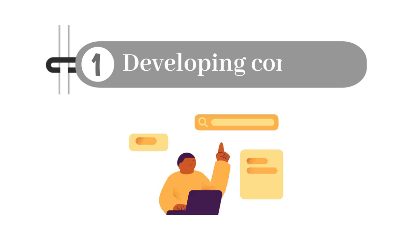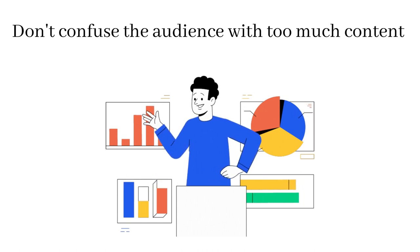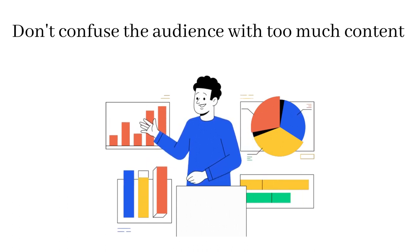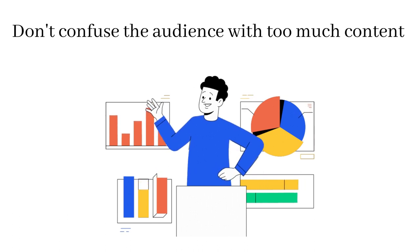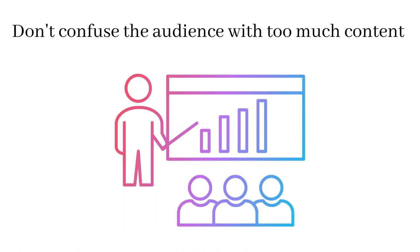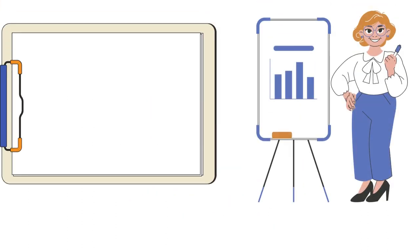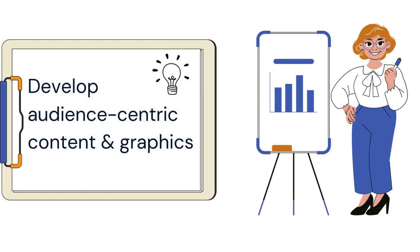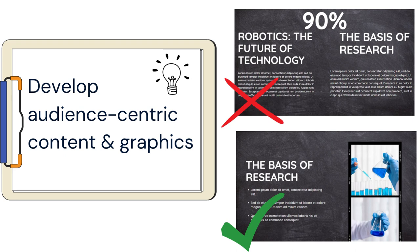The first step in delivering an effective presentation is developing content. In my first years at UBC I used to make the visual aids for my presentations based solely on what I wanted to convey during my presentation. I soon realized that my presentations, while informative, oftentimes left the audience confused. The key to making my presentations more effective was developing audience-centric content and graphics, meaning that instead of focusing on everything I would like to convey, the focus should be on what key things I would like the audience to take away from the presentation.